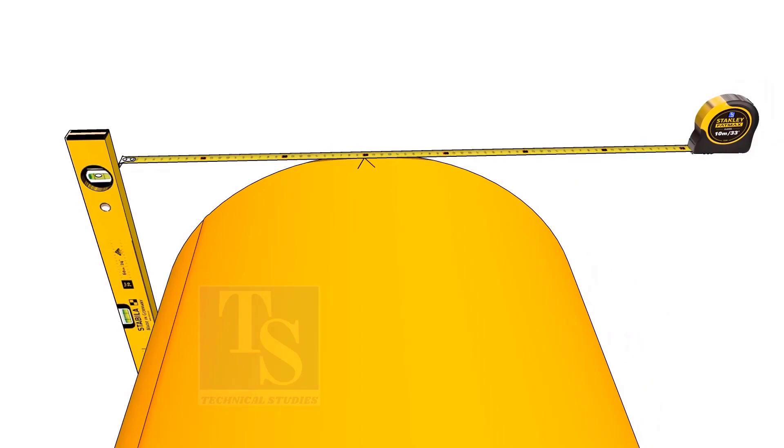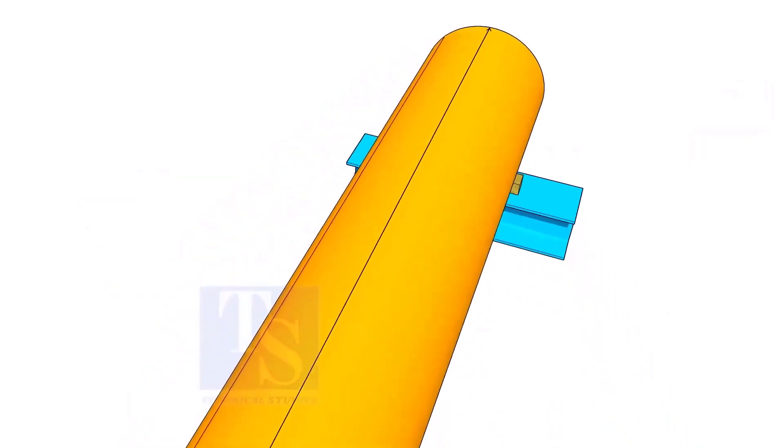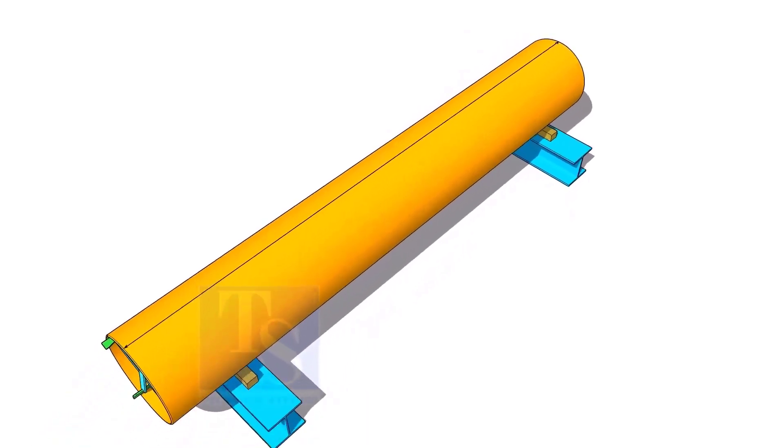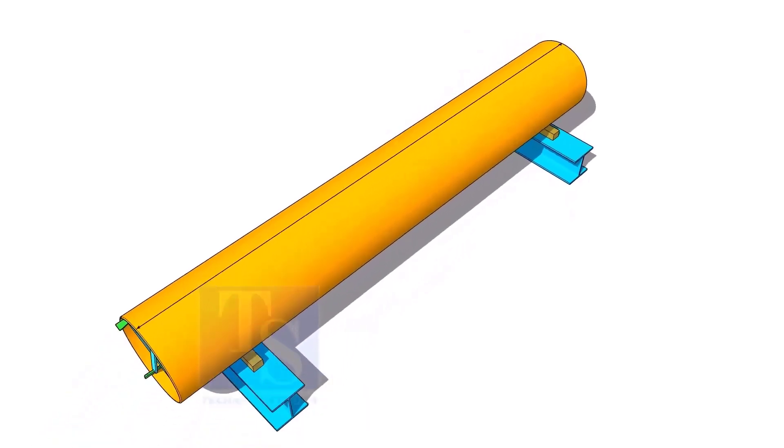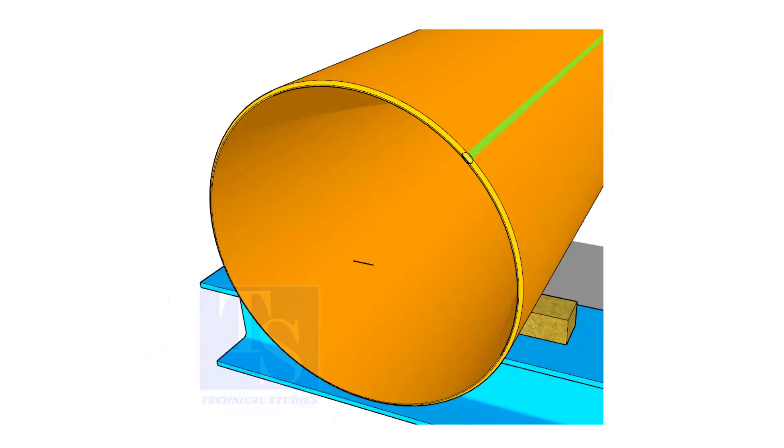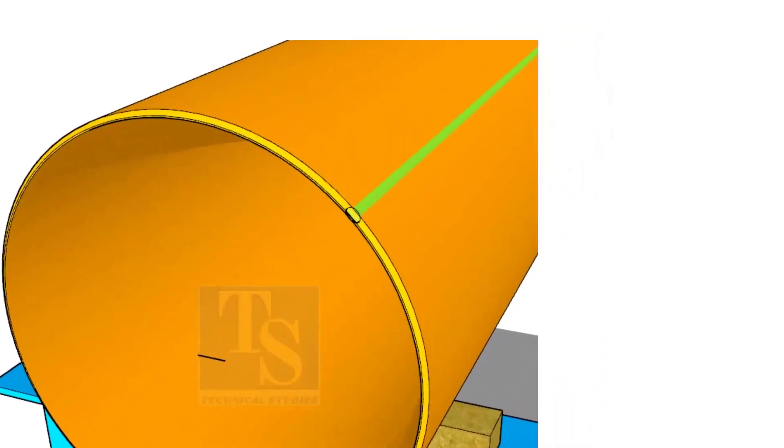Draw a line connecting these marks. If the pipe is welded, you can probably choose the center of the welding as center of the pipe. But you need to check and make sure.